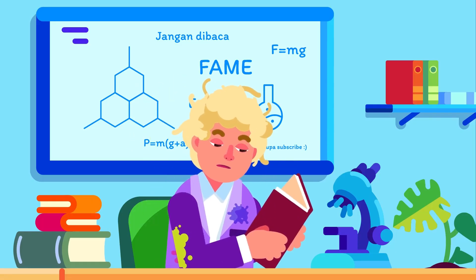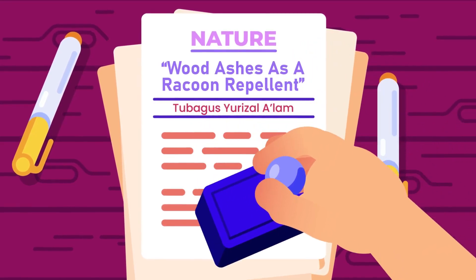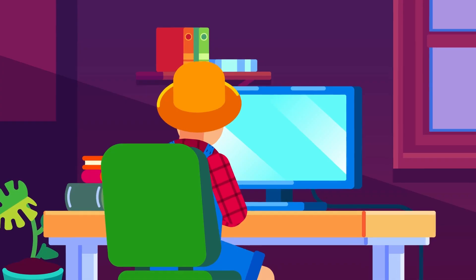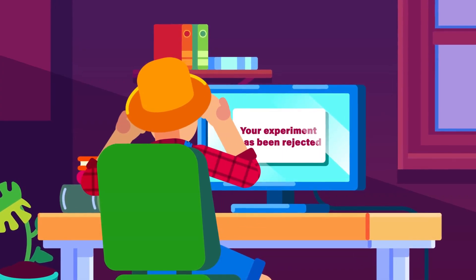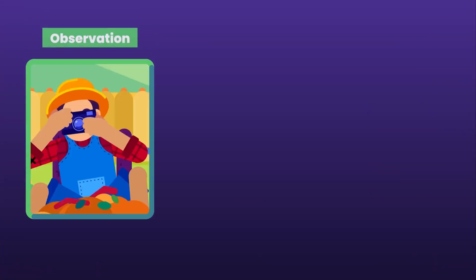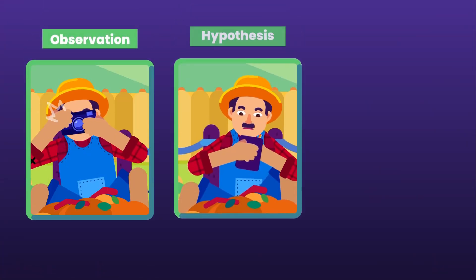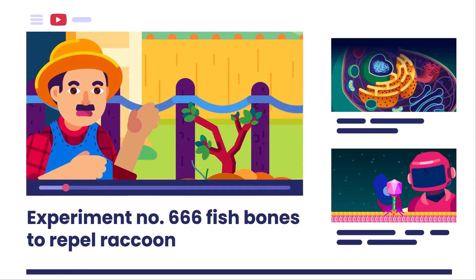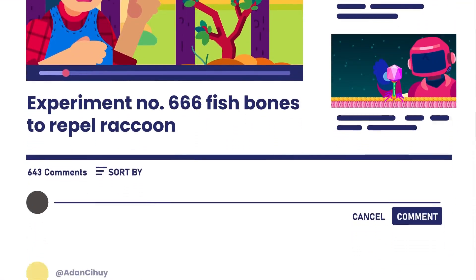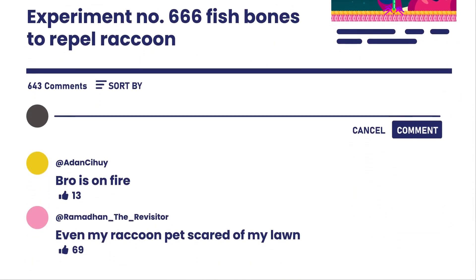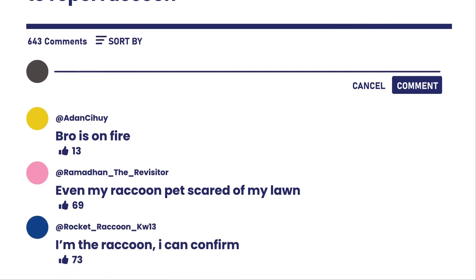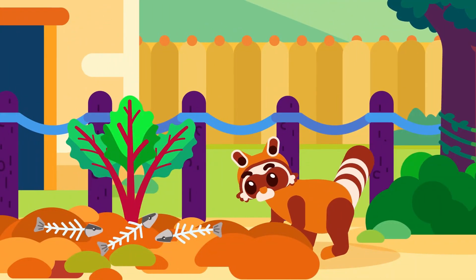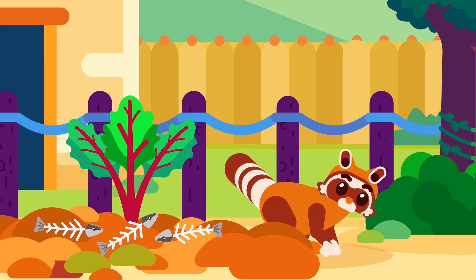Scientists publish their research in credible peer-reviewed journals for verification and improvements by others. What if your hypothesis is wrong? Others or yourself can conduct deeper observation, modify hypotheses, and design new experiments. This makes the scientific method an iterative process. Note that an experiment should be reproducible, meaning other similar experiments should yield similar results.